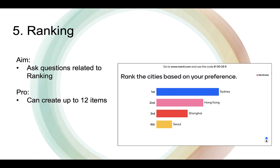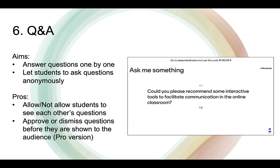If you would like to ask questions related to ranking, this could help. You can create up to 12 items. If you want to let the audience ask you questions without a designated Q&A slide, do consider this question type. You can also customize features like allowing students to see each other's questions and approve or dismiss questions before they are shown to the audience.